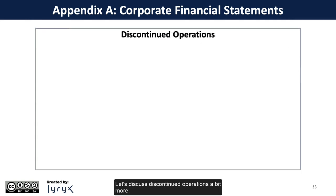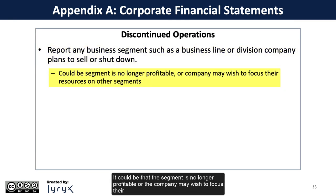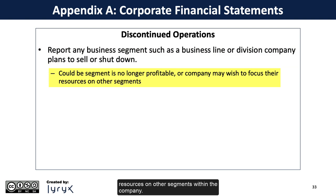Let's discuss discontinued operations a bit more. This section is to report any business segment — such as a business line or division — that the company plans to sell or shut down. It could be that the segment is no longer profitable, or the company may wish to focus their resources on other segments within the company.